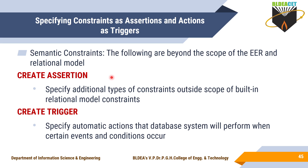CREATE ASSERTION command is used to specify additional types of constraints outside the scope of built-in relational model constraints. You already know that primary key, foreign key — all these are the built-in constraints. Other than that, according to the application requirement, if you want to specify your own constraints, yes, it is possible with the help of CREATE ASSERTION.